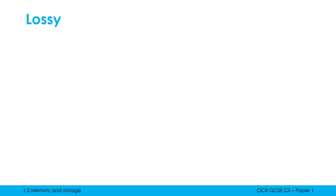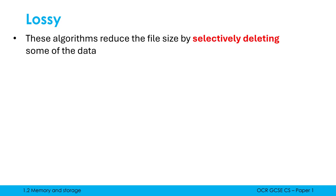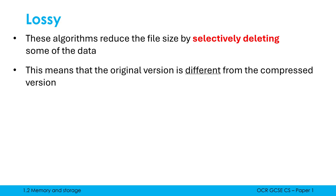There are two types of compression: lossy and lossless. Lossy is a category of algorithms which reduce file size by selectively deleting some of the data — the most obvious way to compress a file. How it does this depends on the exact algorithm; there are many for images, sound, and video. They try to remove data which is least noticeable to the user. Crucially, the original version before compression is different from the compressed version — we've deleted some data, so we can't go back to the original.